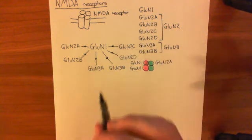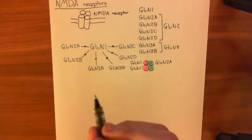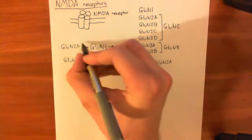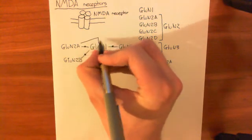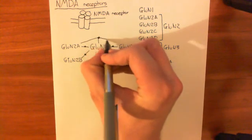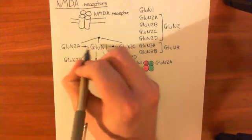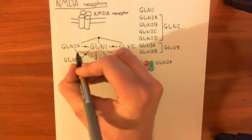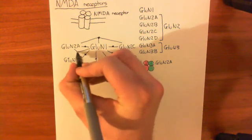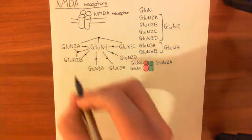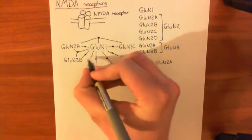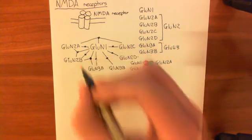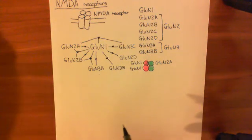You can also make hetero-tetramers which involve three different subunit types. For example: GluN1 with GluN2A and GluN2C; GluN1 with GluN2A and GluN2B; or GluN1 with GluN2B and GluN3A.